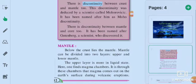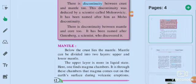The first mantle. Below the crust lies the mantle. Mantle can be divided into two layers, upper and lower mantle. The upper layer is more in liquid state, hence one finds magma chambers. It is through these chambers that magma comes out on the earth's surface during volcanic eruption.